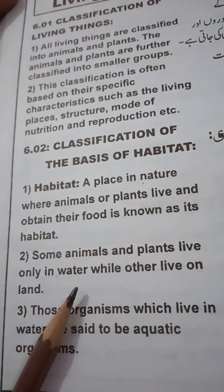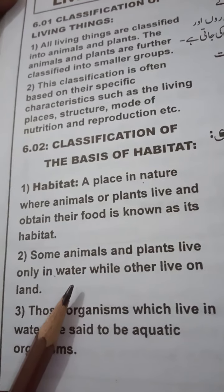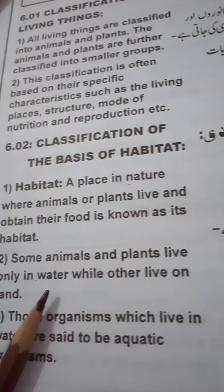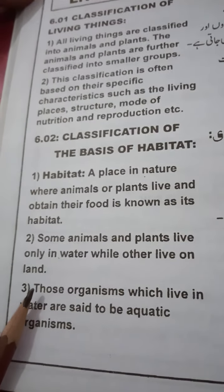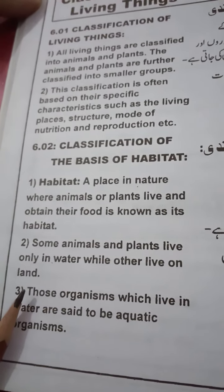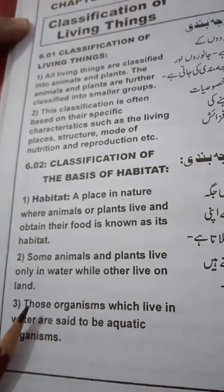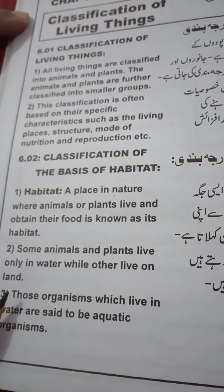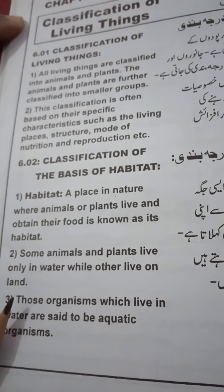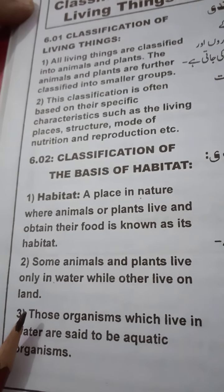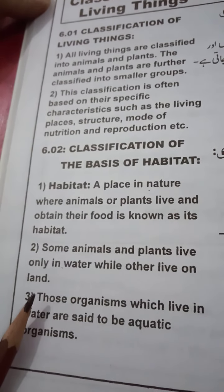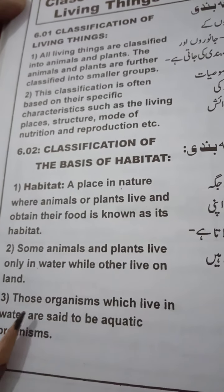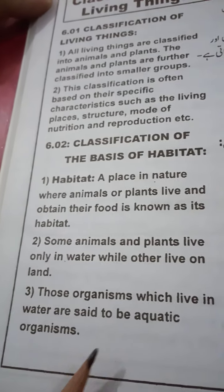Some animals and plants live only in water. Tumne dekha hoga — baaz janwar sirf pani mein reh sakti hai, jaise machliya. Machli ko pani se bahar nikal do, mar jayegi. While others live on land — kuch janwar zameen pe rehte hain. Agar loomri ko pani mein daal do, mar jayegi. Those organisms which live in water are said to be aquatic organisms.